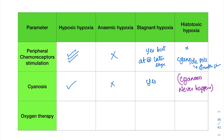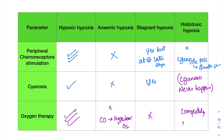Oxygen therapy: maximum benefit in hypoxic hypoxia since oxygen itself is deficient. In anemic hypoxia it is not useful, but in CO poisoning hyperbaric oxygen can be used. In stagnant hypoxia it is not of great benefit. In histotoxic hypoxia it is completely useless — giving oxygen therapy is of no point since the problem is with the tissue itself.